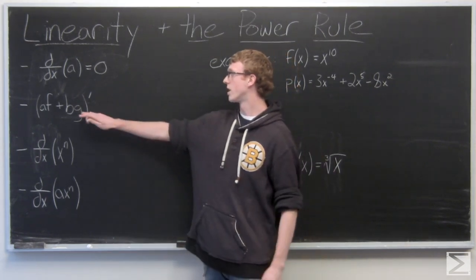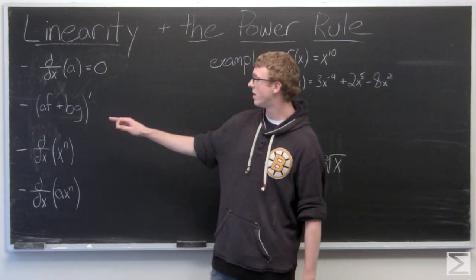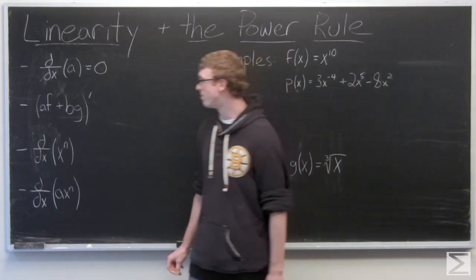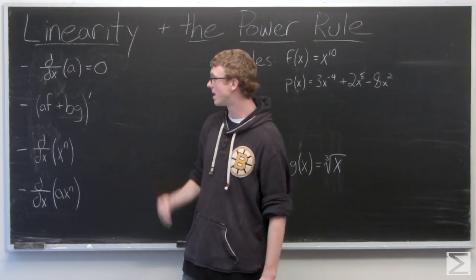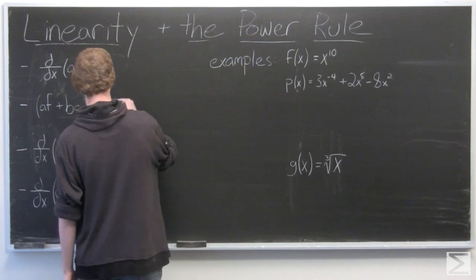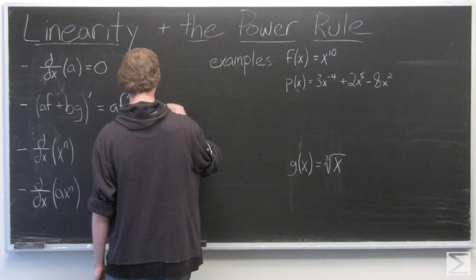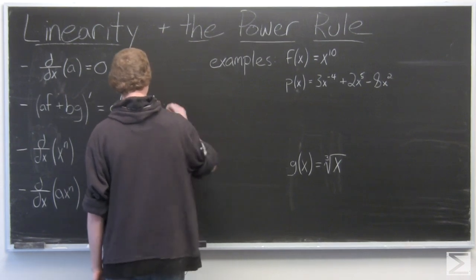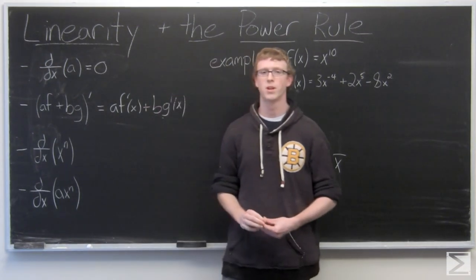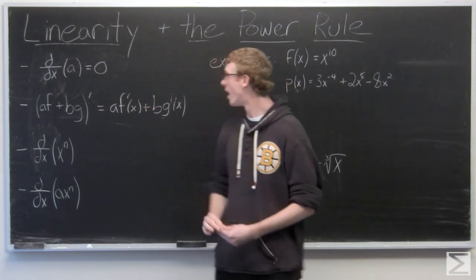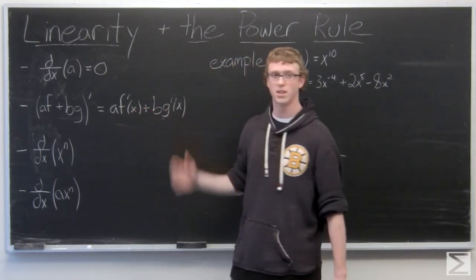But first we want to take a look at linearity. So if we have constants a and b and functions f and g, the derivative of af plus bg is simply a times f prime plus b times g prime. Now this rule is going to come into play pretty much everywhere. So this is something really important to remember: a times f prime plus b times g prime.